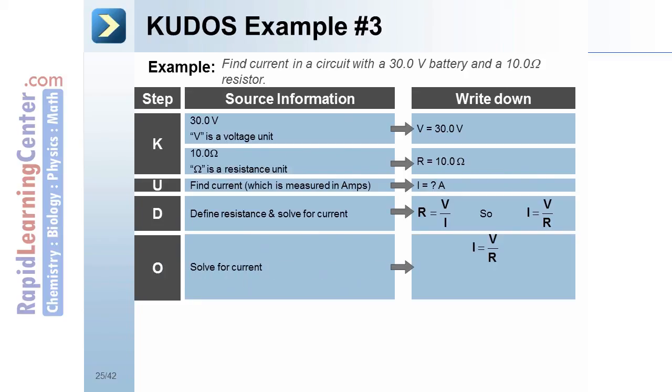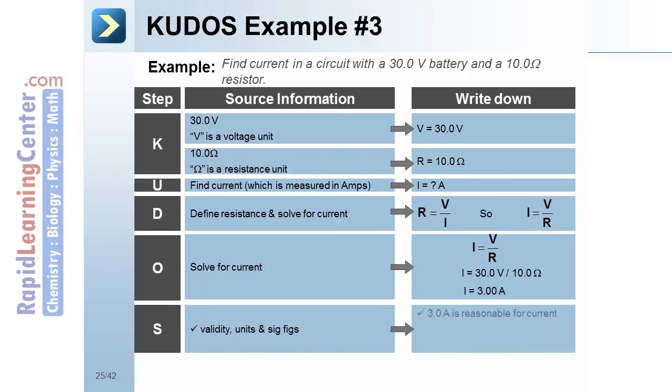For our output, we will need to substitute the values that are given and calculate an answer. When we substantiate that answer, we will see that that's a reasonable amount of current in the correct unit and with the correct number of significant figures.